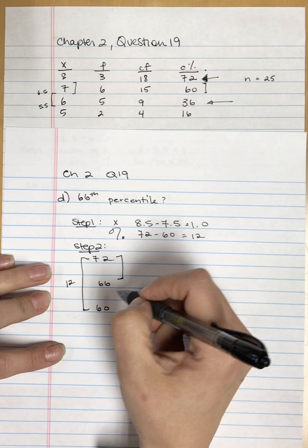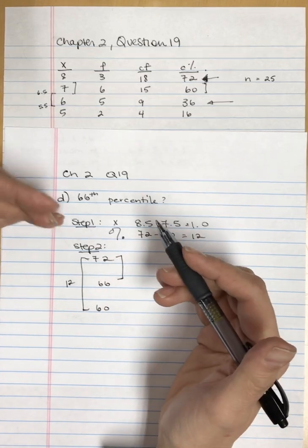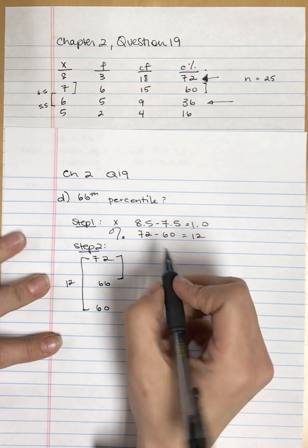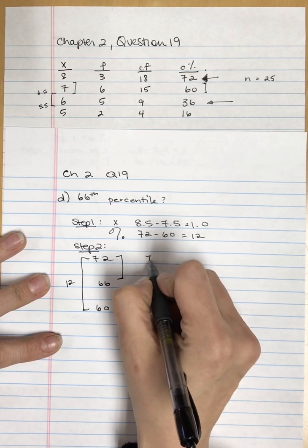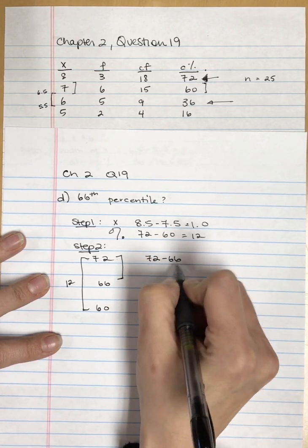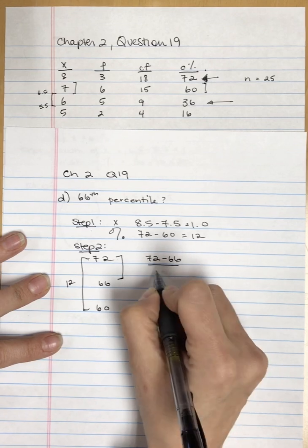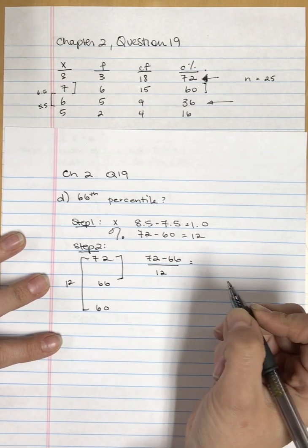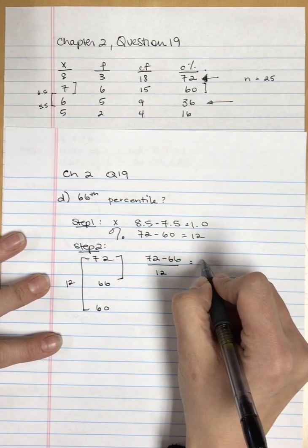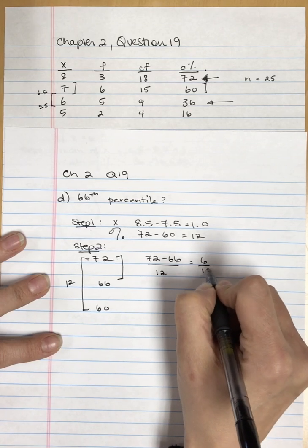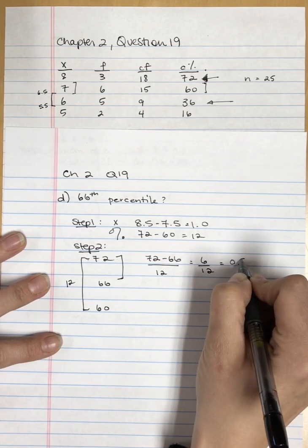What proportion, what percentage of the distance do I need to go down in this category? I take 72 minus 66 and divide it by 12. That gives me 6 divided by 12, which is 0.5.